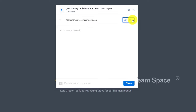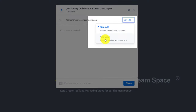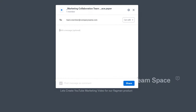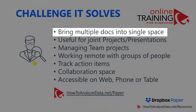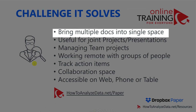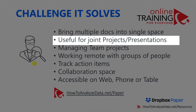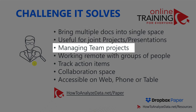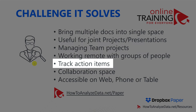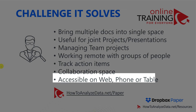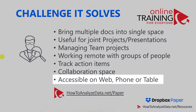Permissions in Dropbox Paper are simple — you can give editing permissions or just view permissions. You add a note to your message and then click share. Dropbox Paper solves a lot of challenges facing teams in today's remote environment. It is useful for bringing multiple docs into a single workspace, joint projects and presentations, managing team projects, working remote with groups of people, tracking action items, and managing collaboration space. It is accessible on the web, phone, or tablet.